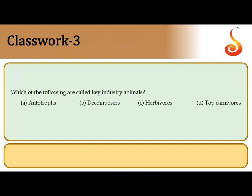The third question asks which animals are called the key industry animals. Within the food chain, one trophic level converts energy stored in plant biomass into energy stored as animal biomass — these are herbivores. Herbivores occupy the second trophic level, just above the producers, and they conserve energy in the form of secondary productivity (flesh). Herbivores are also referred to as primary consumers, so they are the key industry animals.